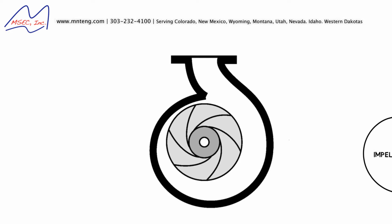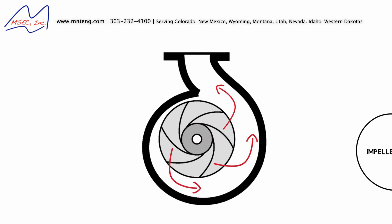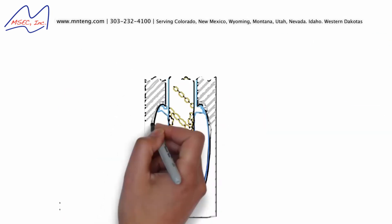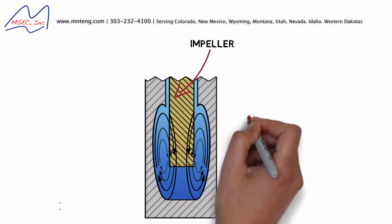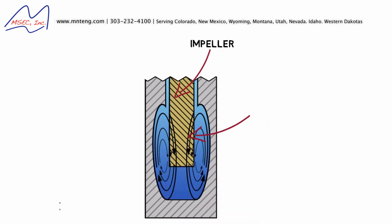Liquid entering a centrifugal pump's impeller can pass between the veins only once. Energy is added to the liquid as it travels from the center of the impeller to the rim. In a regenerative turbine pump, liquid recirculates between the impeller's veins. This helical action carries the liquid forward.